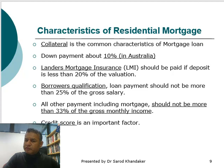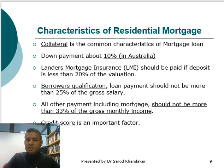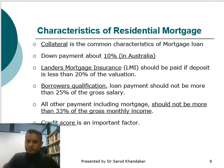Regarding the characteristics of residential mortgage: first, collateral is the most common characteristic of a mortgage loan. Collateral means there is an underlying asset included in the mortgage — in this case the house you're purchasing. This is the collateral for your loan. Second, the down payment is about 10% in Australia. Around September 2018 the Royal Commission started examining loan conditions more strictly, making it harder for borrowers to borrow more money. The down payment is typically around 10-20%, though during the GFC in Australia it was possible to borrow with only a 5% deposit.